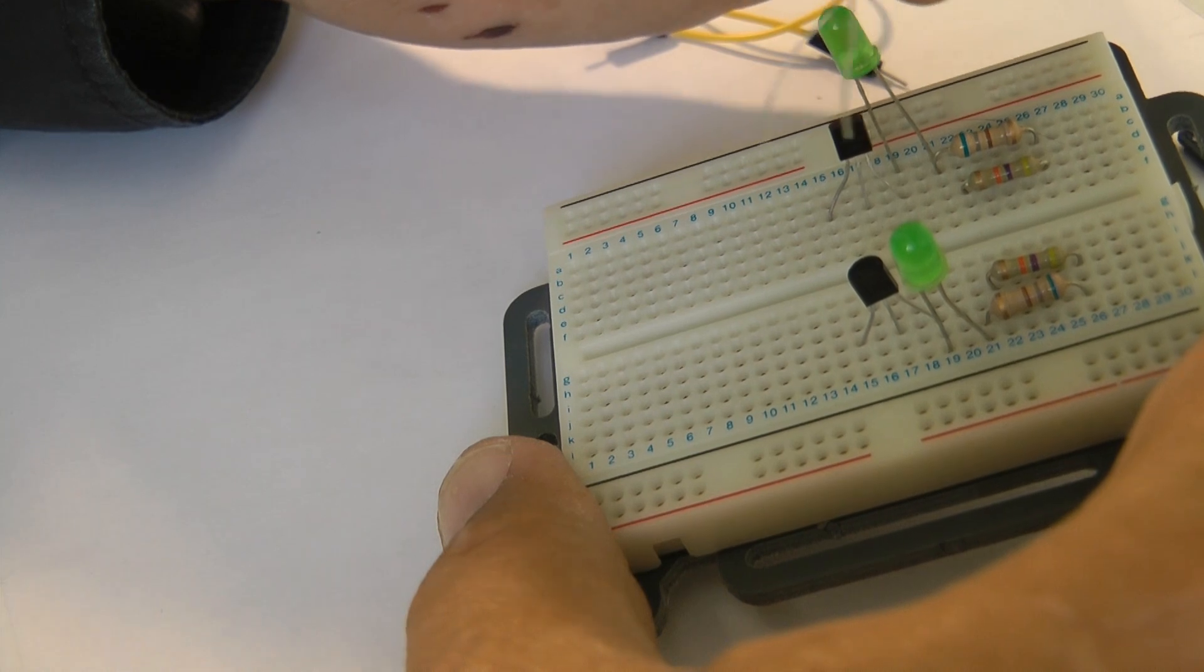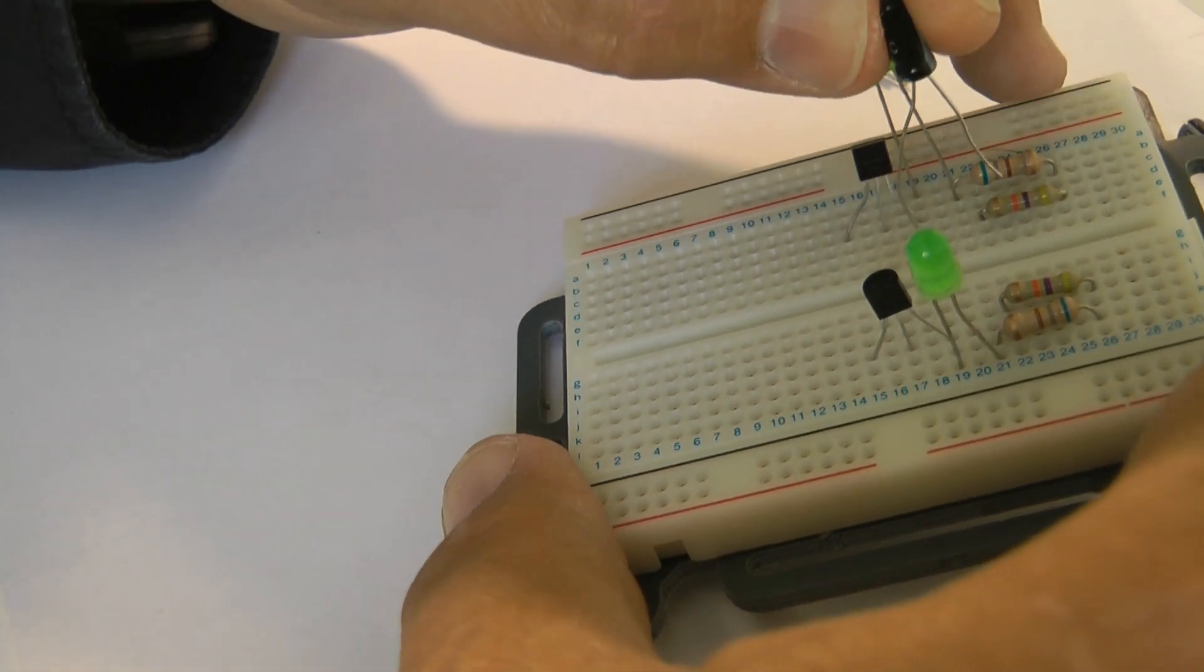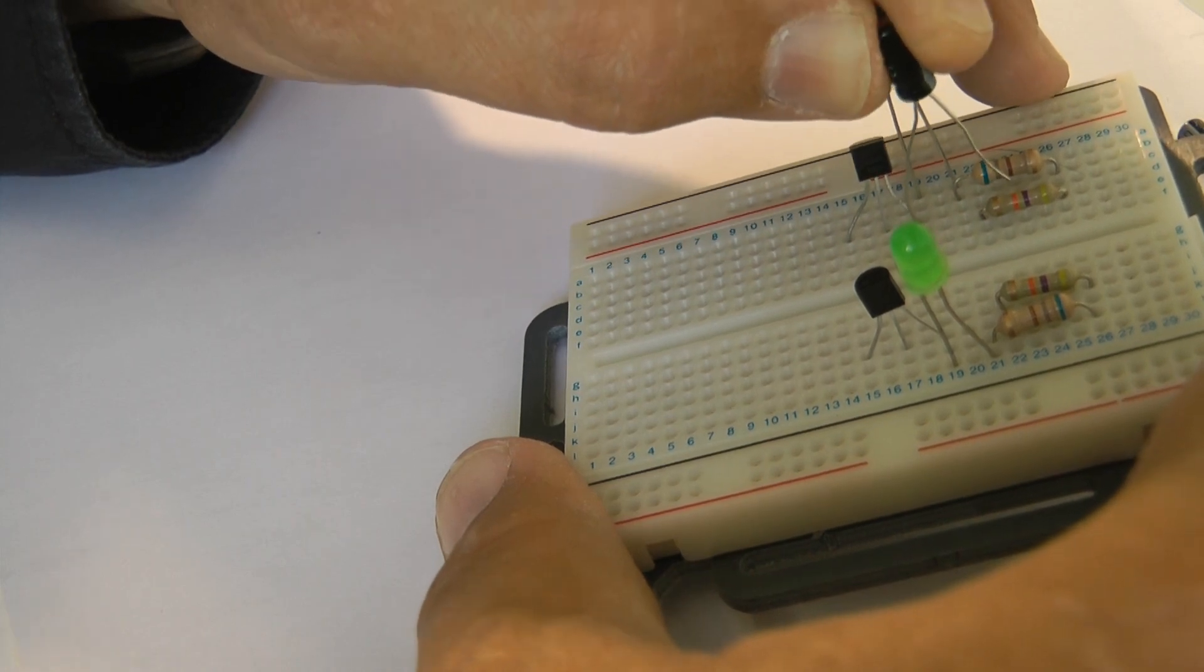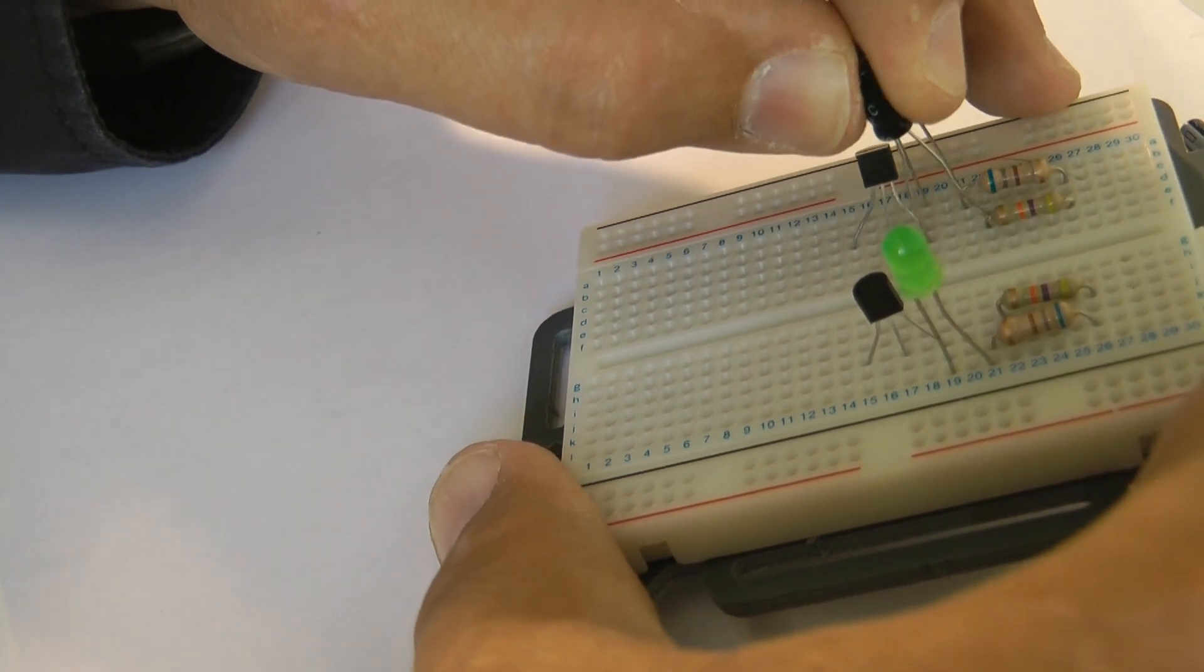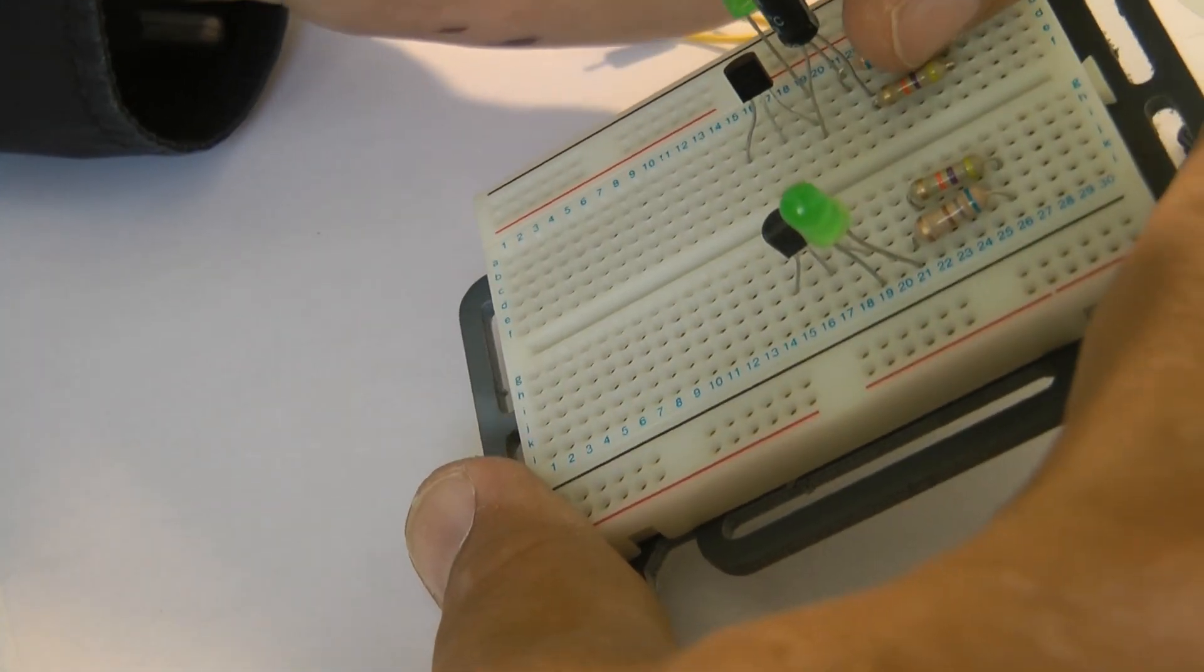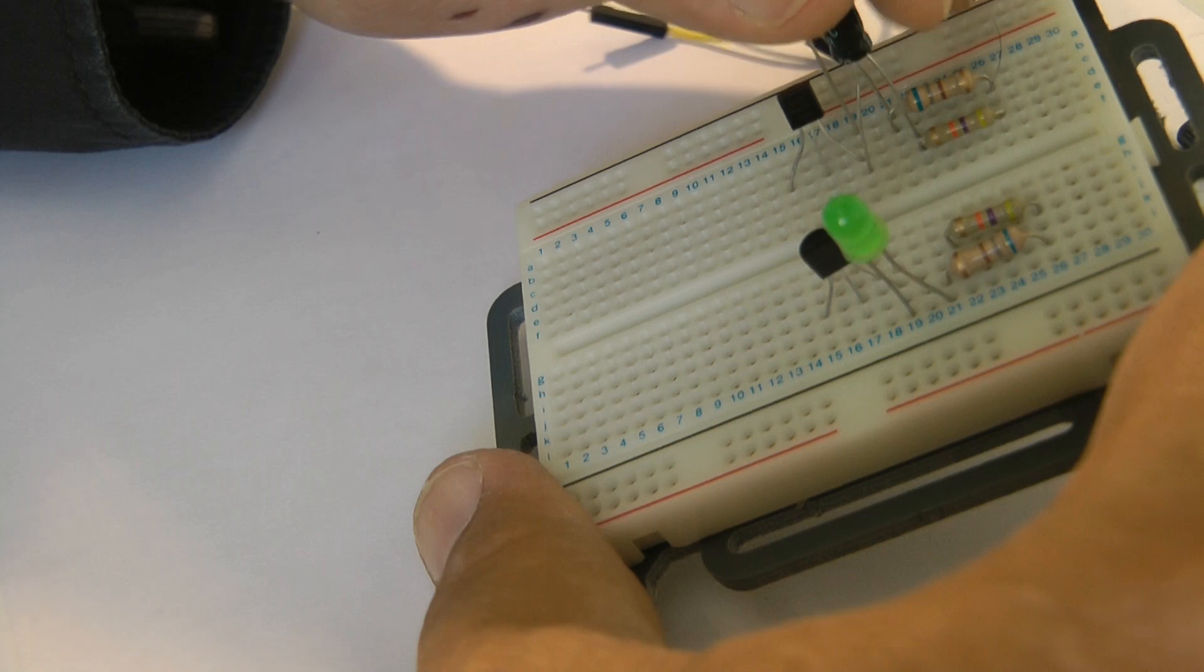The positive side of the capacitor goes to the collector and so we can place it over there. And the negative side of the capacitor goes to the resistor, the high value resistor over there.